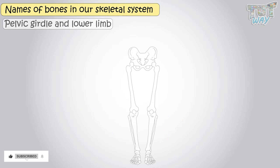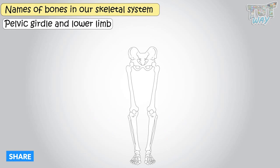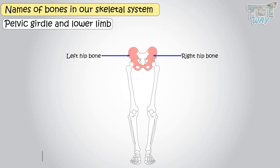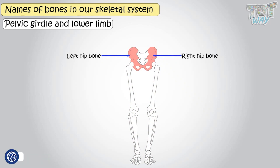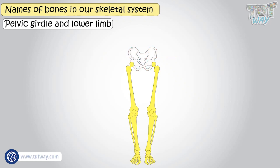Now let's learn about the pelvic girdle and the lower limb. The pelvic girdle consists of left and right hip bones. It connects the lower limbs to the skeleton. Now let's learn the bones of our lower limb, that is, our leg.